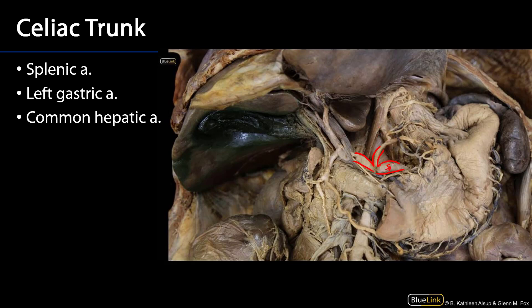The first branch is the splenic artery. The splenic artery is a rather impressive tortuous artery that runs posterior to the stomach, often found in close association with the pancreas, and heads out to its namesake, the spleen. The splenic artery will not only supply the spleen with blood, it will also supply the fundus of the stomach through short gastric arteries and supply in part the greater curvature of the stomach through the left gastro-omental artery, which also supplies the greater omentum with blood.